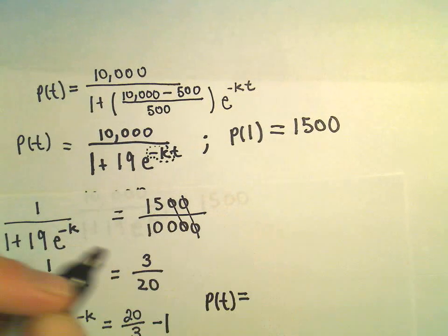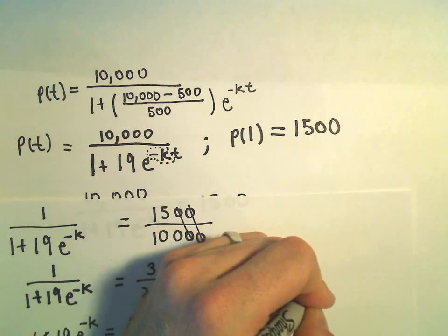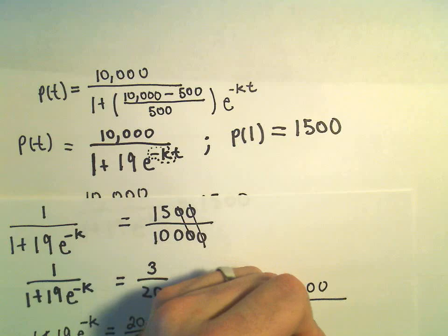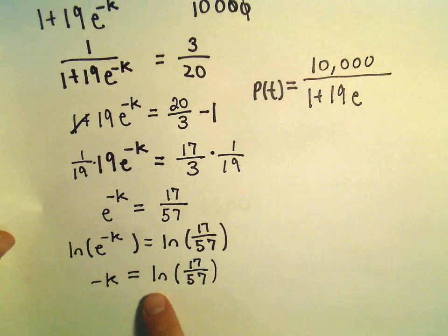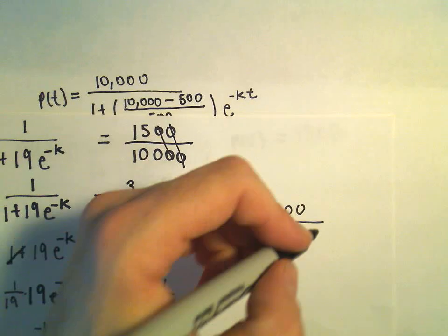Again, we figured out that it was 10,000 over 1 plus 19 times e to the negative k. But, again, we just said that negative k here is this value, the natural logarithm of 17 over 57.